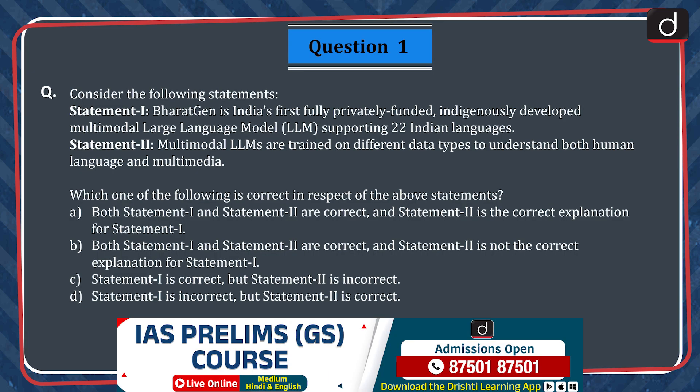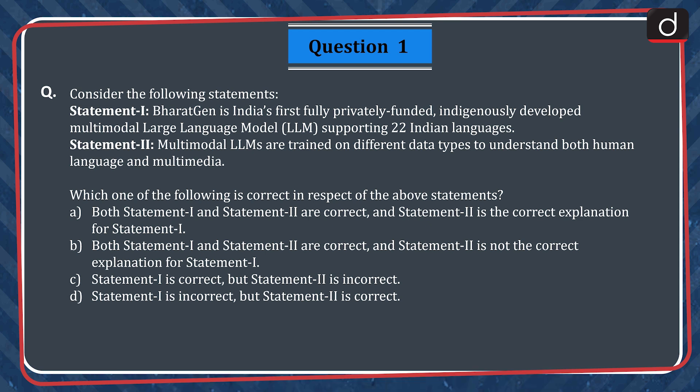Moving on to the first question. Consider the following statements. Statement 1: Bharat Jain is India's first fully privately funded, indigenously developed, multi-modal, large language model supporting 22 Indian languages. Statement 2: Multimodal LLMs are trained on different data types to understand both human language and multimedia. Which of the following is correct in respect of the above statements?